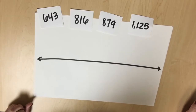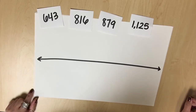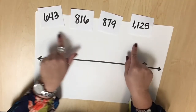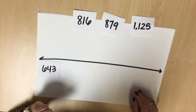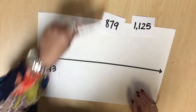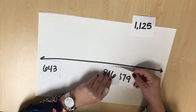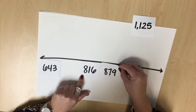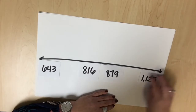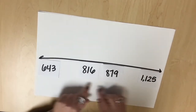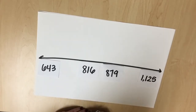Students will continue to build upon previous knowledge by using number lines to compare and order numbers through 1200. Let's use an open number line with the following numbers to compare and order them. Starting with 643, then placing 816. When I place 879, the location of 816 would probably have to change. Then when I place 1125, the location of my other numbers may change. It's important that students understand that number placement may shift based on other numbers placed on the line.